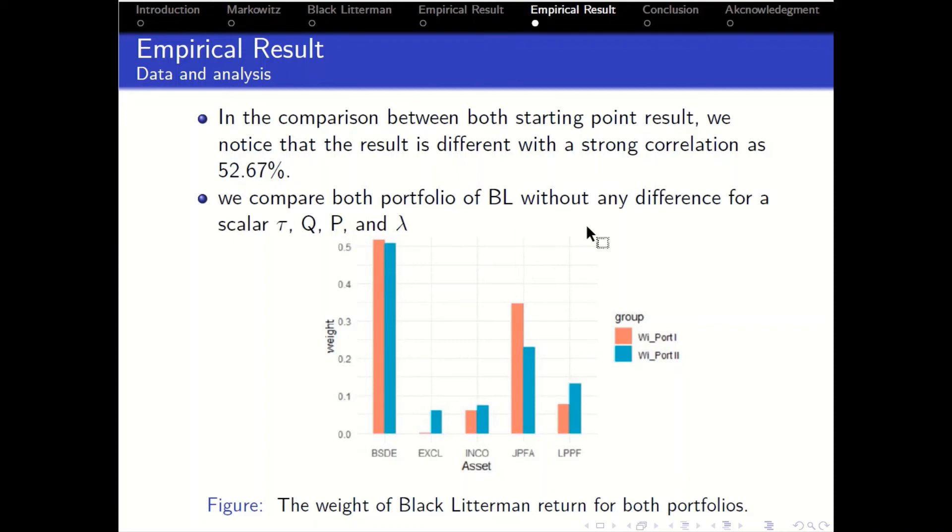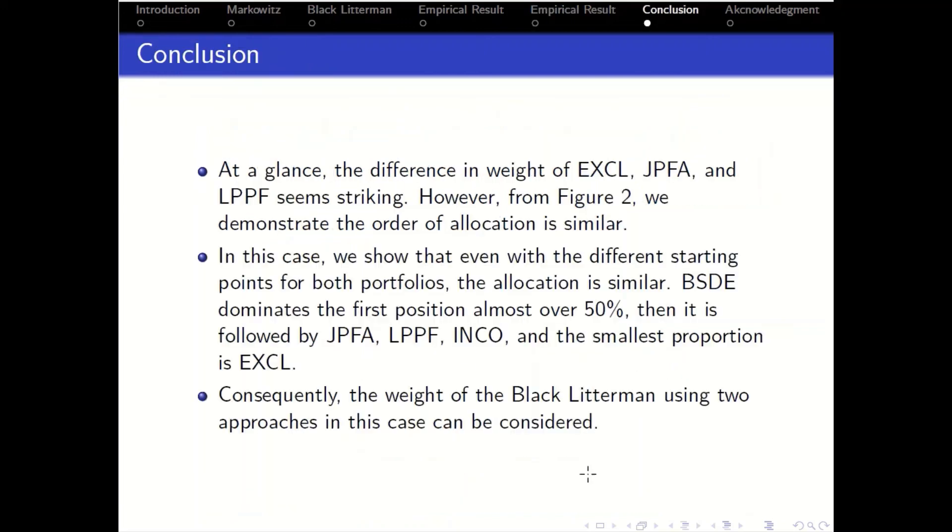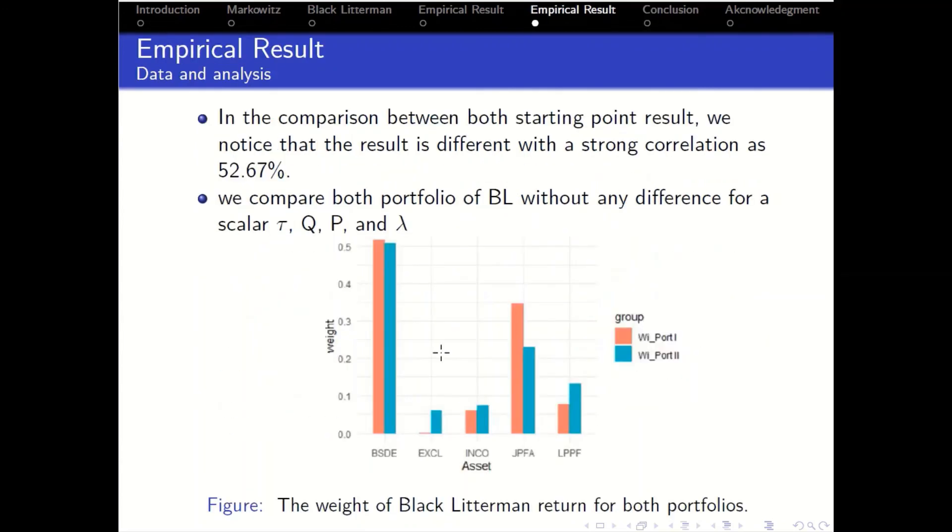We just differ from P. We get the weight for five assets. Weight asset from portfolio one is from reverse optimization and weight portfolio two is from CAPM. At a glance, we can see that there is a significant difference for EXCL, JPFA, and LPPF.